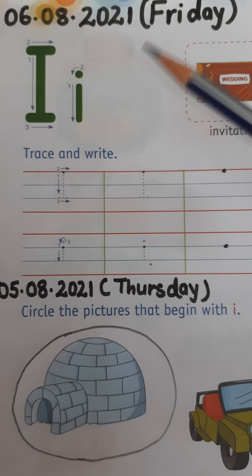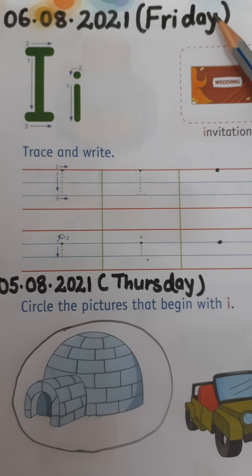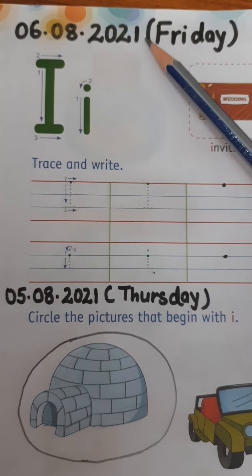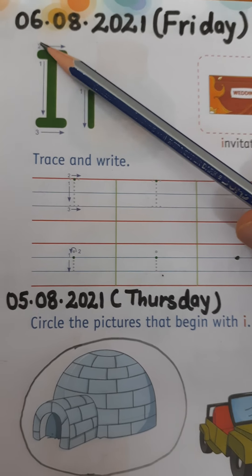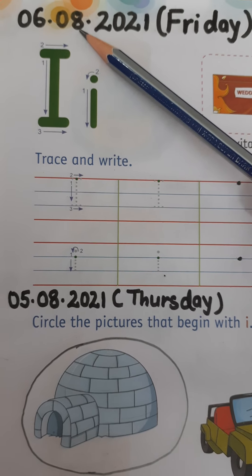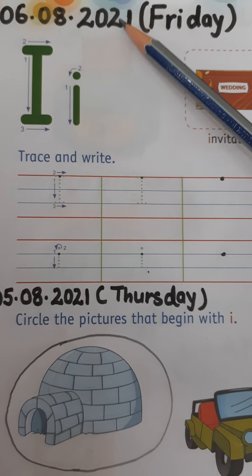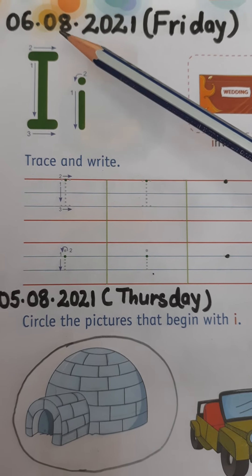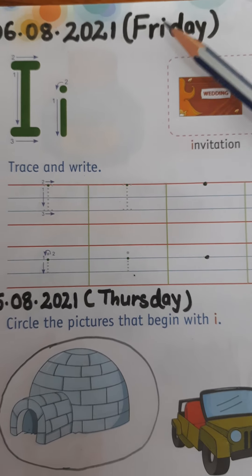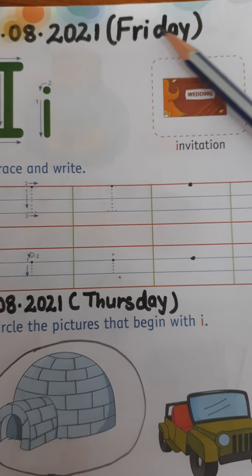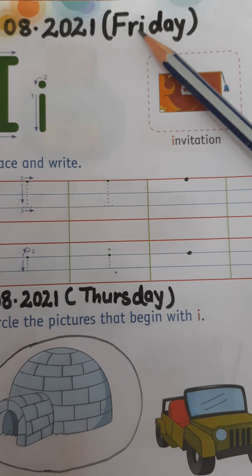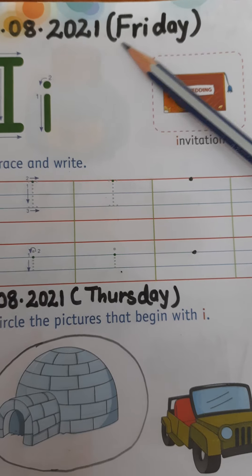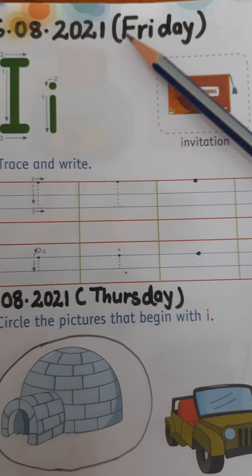Good morning children. How are you today? Today is Friday and the date is 6th of August 2021. 6th is the date, 8th is the month — that is August — and 2021 is the year. Today is 6th of August 2021 and the day is Friday. Spell after me children: F-R-I-D-A-Y, Friday. Today is Friday.